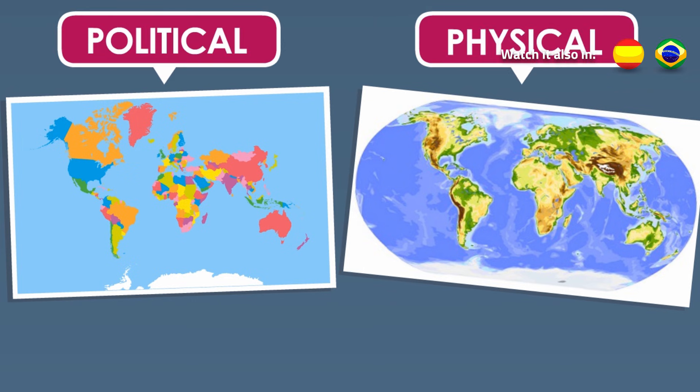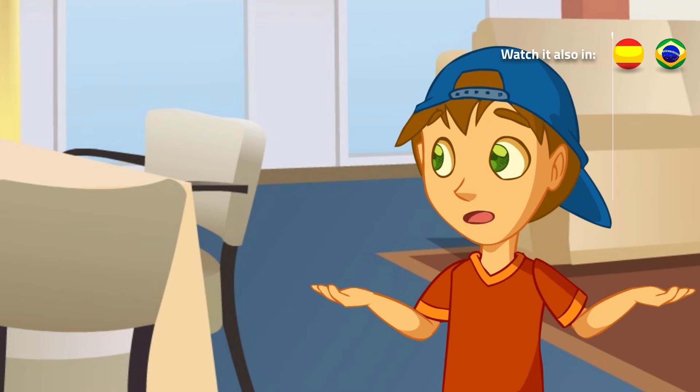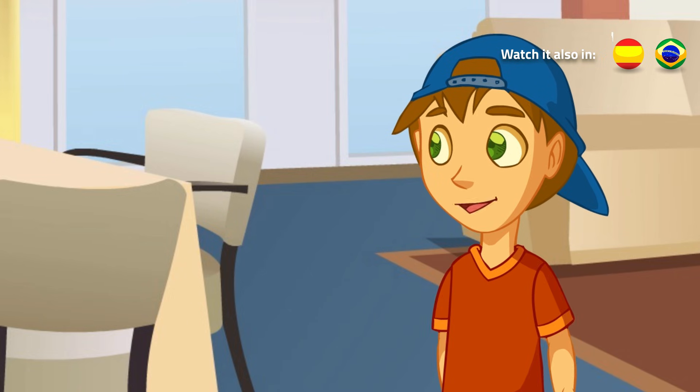That is, it shows the different land forms. Are there any other maps apart from physical and political maps?